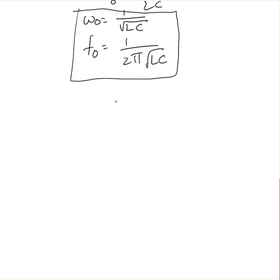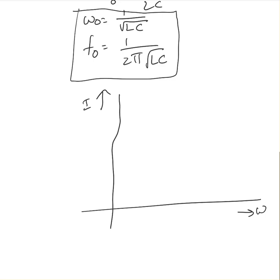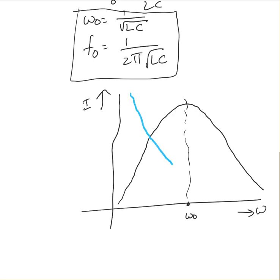Now I'm going to draw a graph with frequency or omega on the x-axis and current on the y-axis. As omega changes, XL is increasing and XC is decreasing. At one point you will see the maximum current, and that maximum current occurs at omega naught — the resonant frequency. If you draw a graph for impedance in the RLC series circuit, at resonant frequency you will see the lowest impedance. So at resonant frequency, maximum current passes through the circuit.